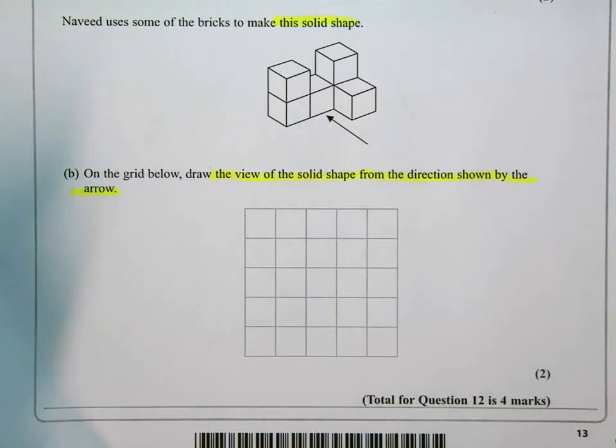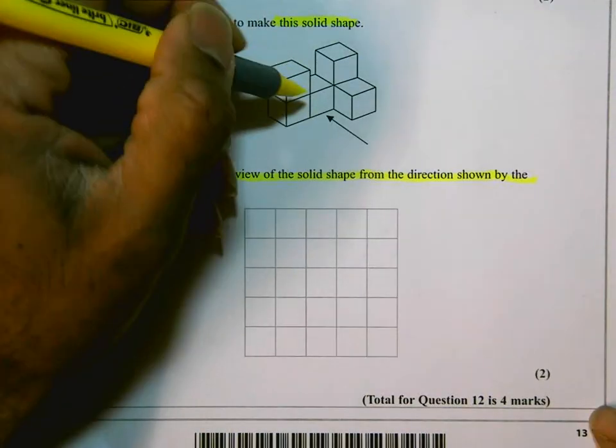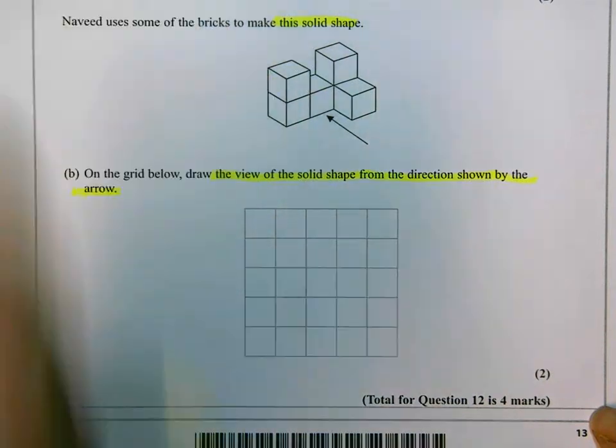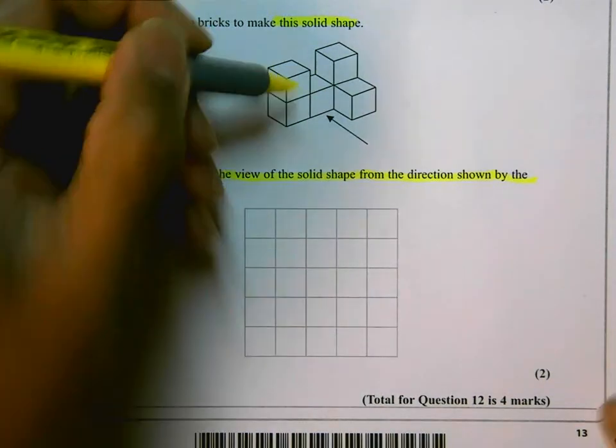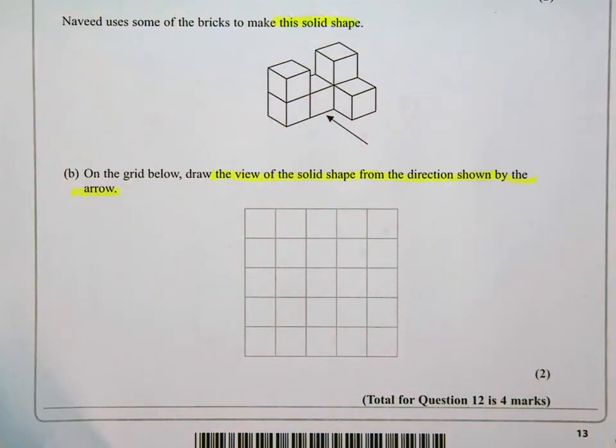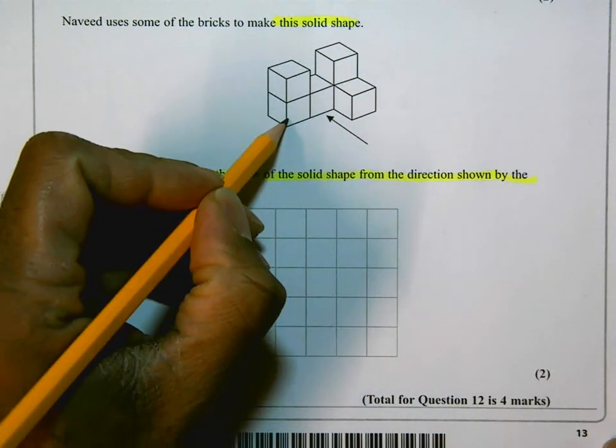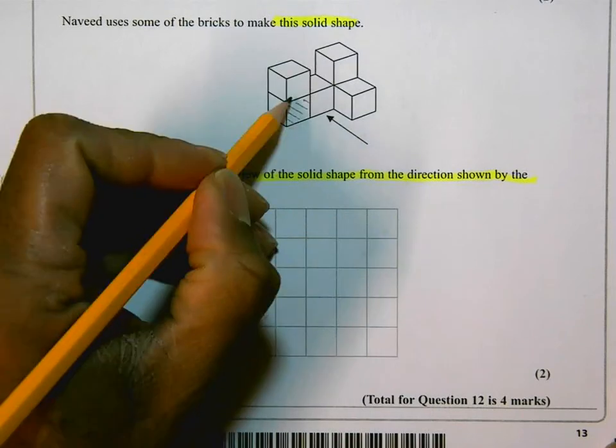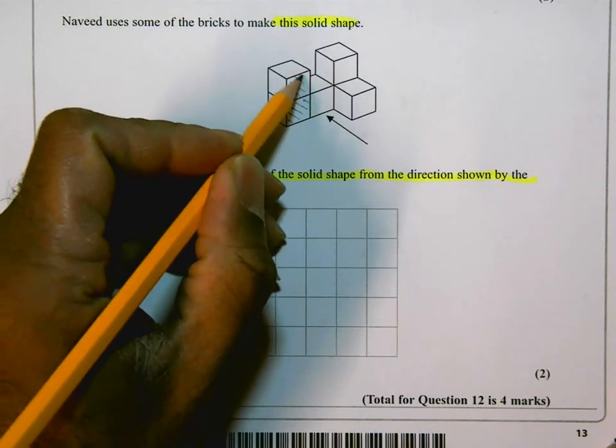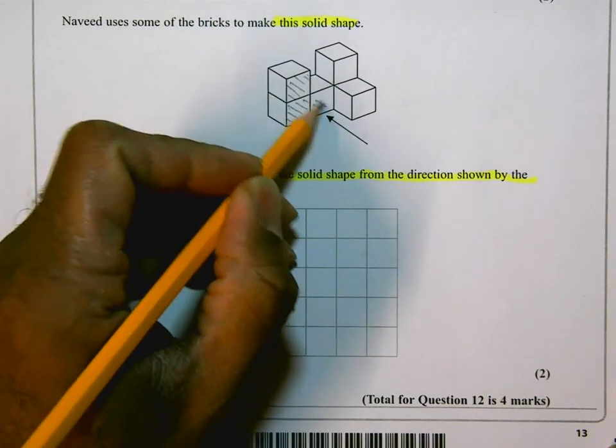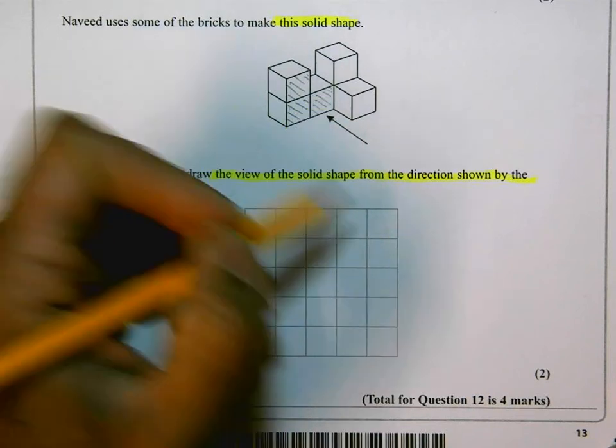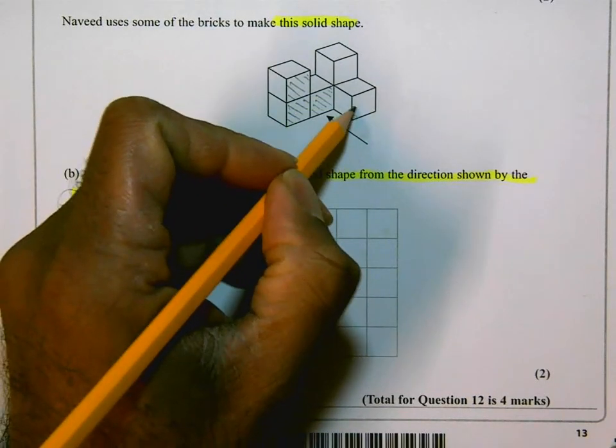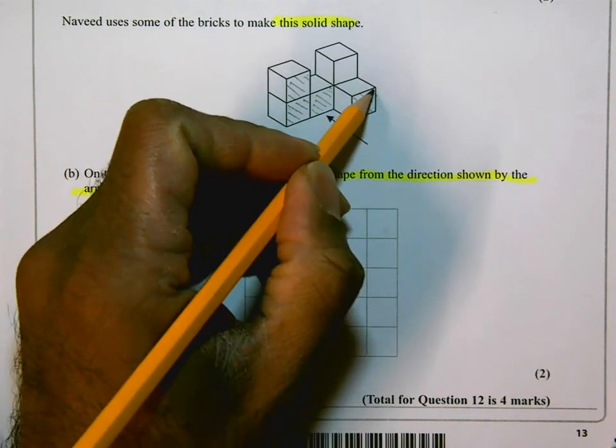What you need to think about is which faces are you going to see? And then you need to draw that onto your diagram. Now the faces that we're going to see. Sometimes I think it's a good idea to shade them. So I will. You will definitely see that face, that face, and that one. You'd also see that face and that one there.